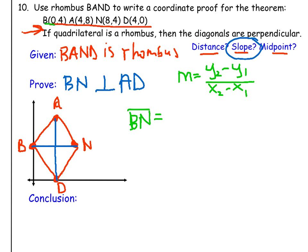So we're going to use the numbers. So B is (0,4) and N is (8,4). So when I put those numbers into the slope formula, 4 minus 4 over 8 minus 0, I get 0 over 8, which is in fact 0.